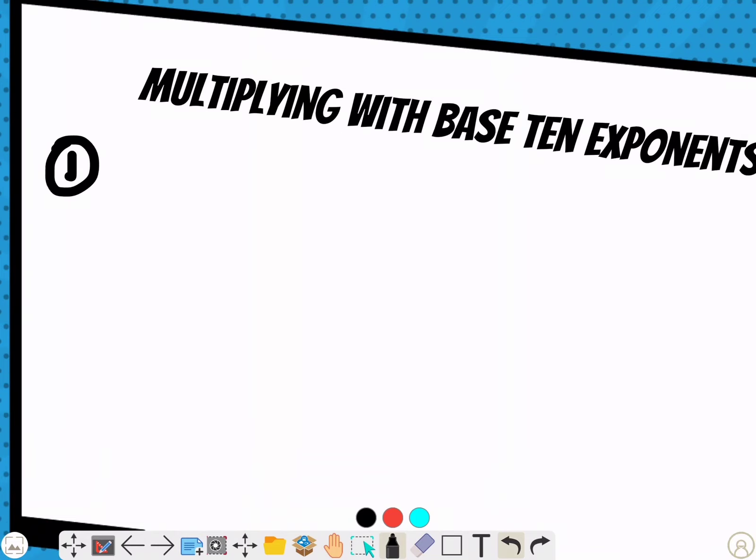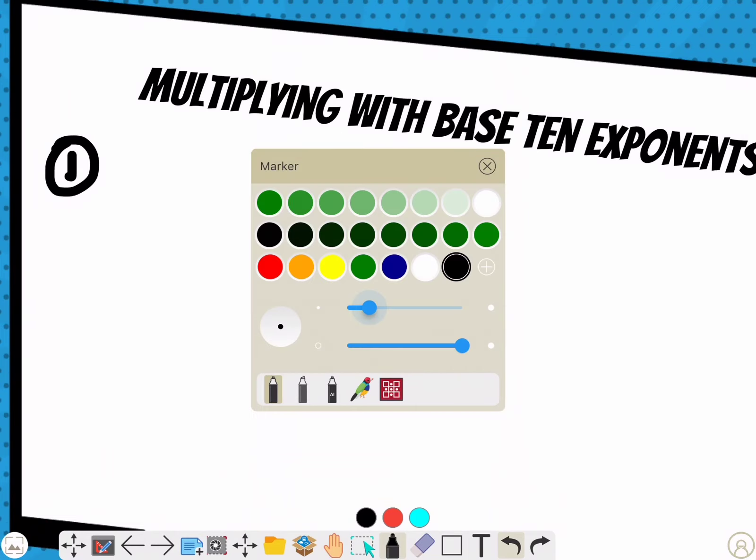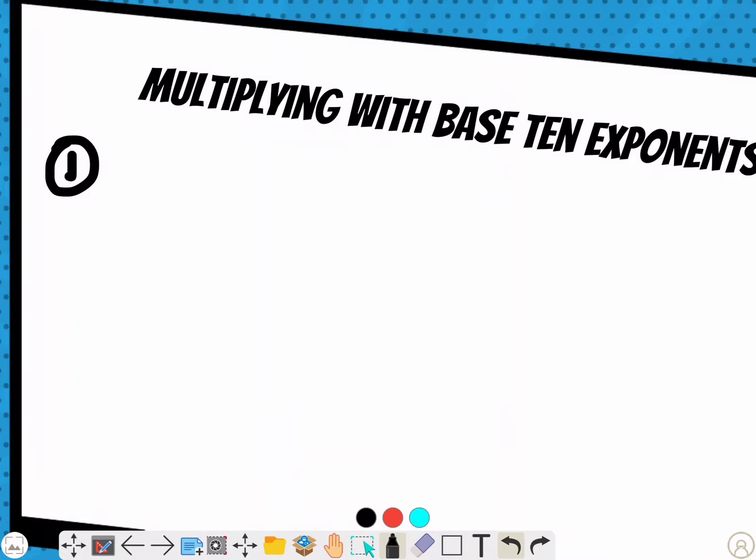Say you have a problem like seven times ten to the third power. You know that seven is just seven, but you have to figure out what ten to the third power is. The way you do this is break it down like ten times ten times ten.